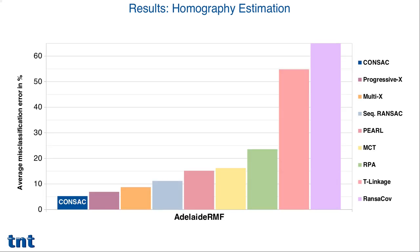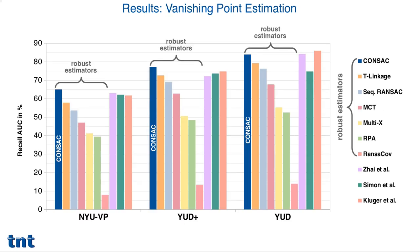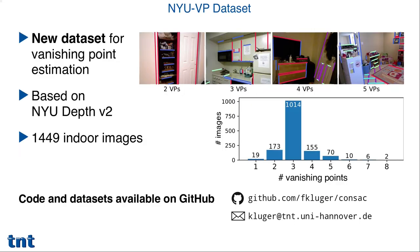CONSAC outperforms competing methods for homography estimation, as well as vanishing point estimation on multiple datasets, even when compared to task-specific vanishing point detectors. We also present a new dataset for vanishing point estimation, which contains more than 1,400 indoor images. Code, trained models, and datasets are available on GitHub.